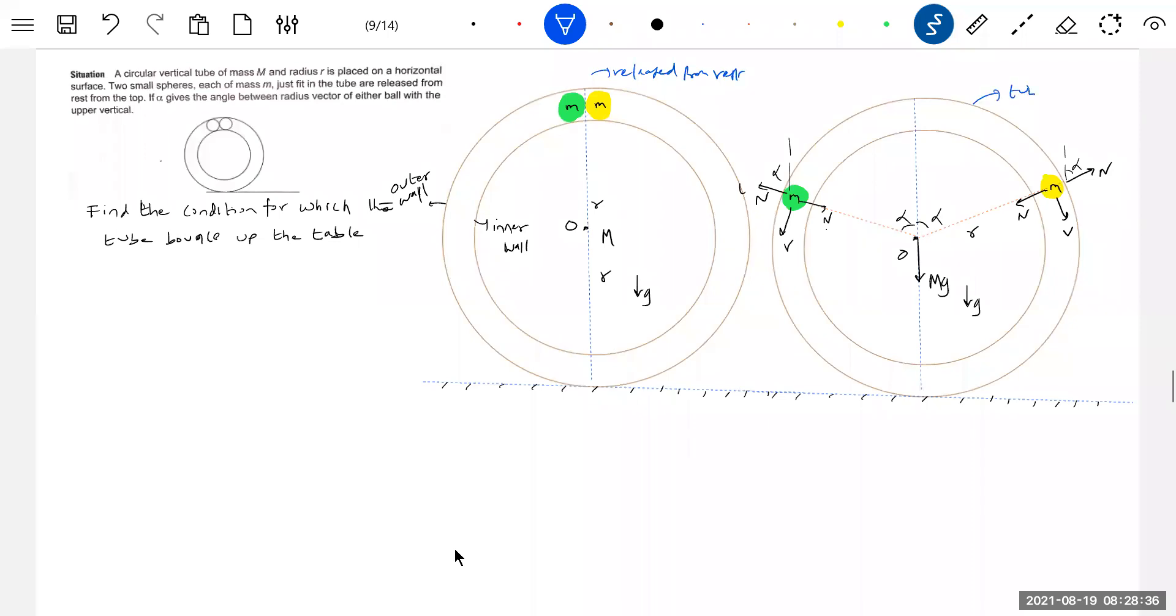Tube is about to lose contact. Tube about to bounce up. When will it bounce up? When 2n cos alpha greater than or equal to mg.